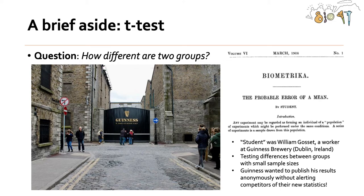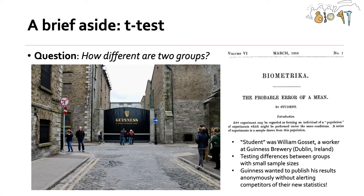I'm going to give you a brief aside about the t-test just to get us thinking about ANOVA. The fundamental question is: how different are two groups? The t-test, sometimes called the Student's t-test, was named after the seminal paper by Student. Student was actually William Gossett, a worker at the Guinness Brewery in Dublin, Ireland. He was interested in testing differences between groups with small sample sizes, and Guinness wanted to publish his results anonymously, so he published the paper under the name Student.